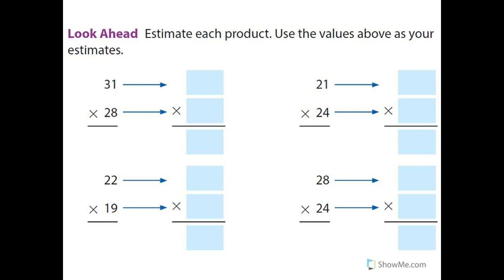Estimate each product. Use the values above as your estimates. On 31 times 28, I'm going to use 30 times 30. I'm going to do 3 times 3 again, get 9. And I'm going to estimate 31 times 28 is going to be around 900.